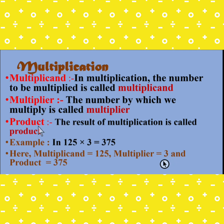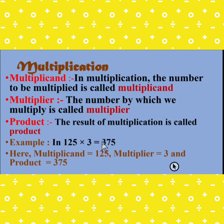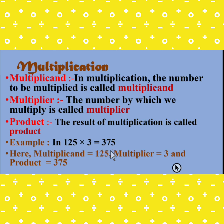And the third term is product — the result of the multiplication is called the product. For example, in 125 into 3 equals 375: 125 is called the multiplicand, 3 is called the multiplier, and the result 375 is called the product.